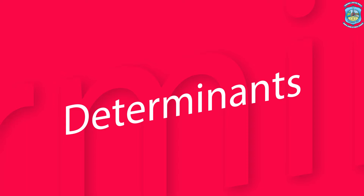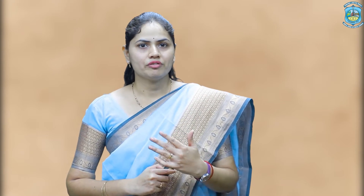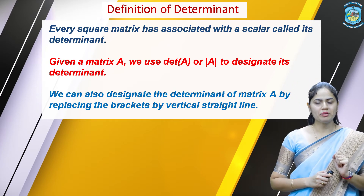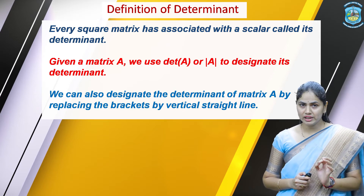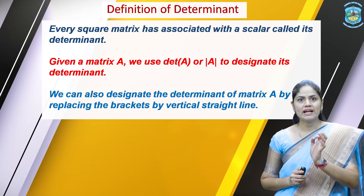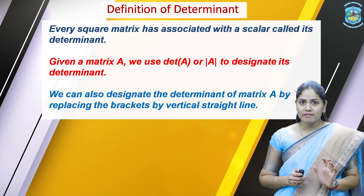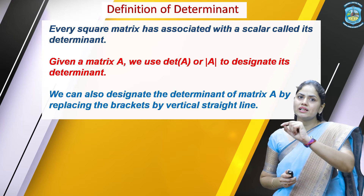The first topic of determinant will be the definition of determinant. Then we will see properties of determinant. These properties will be helpful in the expansion of determinants. Let us start with the definition of determinant. Every square matrix has associated with a scalar called its determinant. Square matrix is a matrix which has the same number of rows and columns, meaning m is equal to n. Every square matrix has associated with a scalar, and that constant is called its determinant.